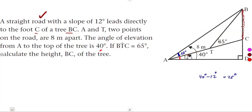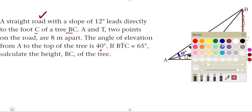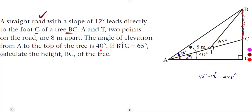The angle at TC is 55 degrees. Since this is a straight road leading directly to the foot of the tree at C, the other angle at T can be calculated by subtracting 65 degrees from 180 degrees, giving us 115 degrees.